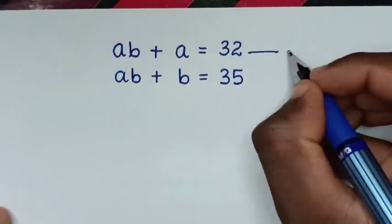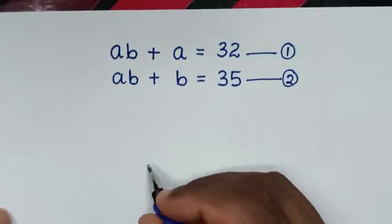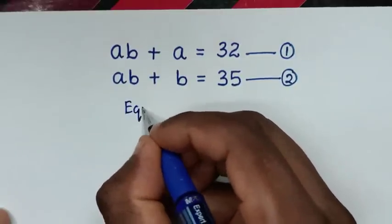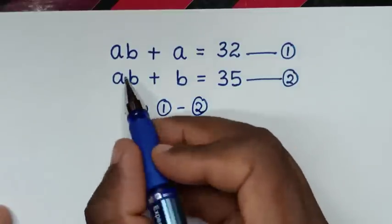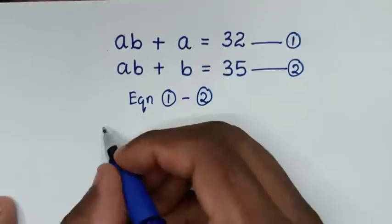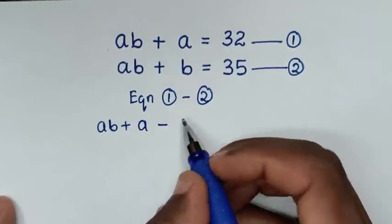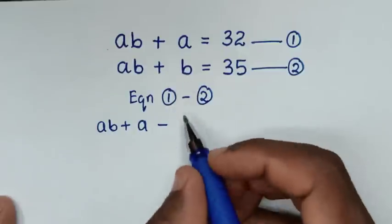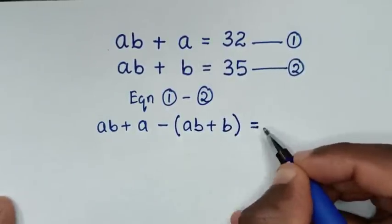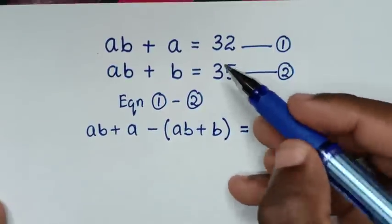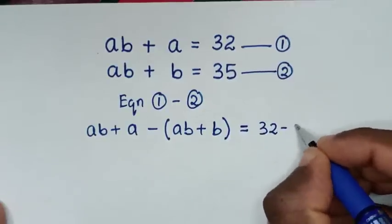We'll label these as the first equation and the second equation. In the first step, we'll take equation 1 minus equation 2. From equation 1 the left side is AB plus A, and from equation 2 the left side is AB plus B. On the right side we have 32 minus 35.